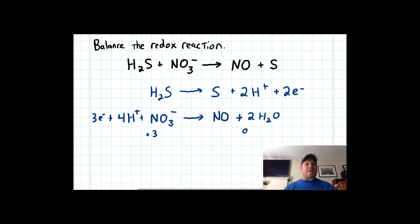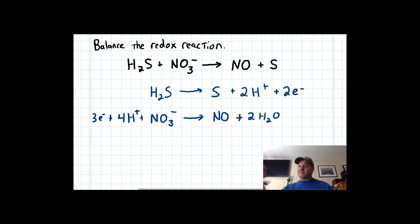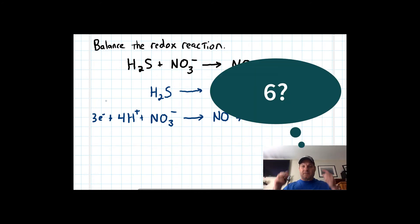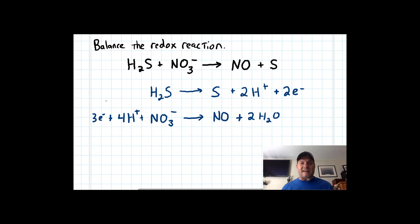Now the tricky part: we need the same number of electrons on both sides. We find the least common multiple of two and three, which is six. So we multiply each reaction by a coefficient to get six electrons on both sides. We multiply the oxidation half-reaction by three and the reduction half-reaction by two.